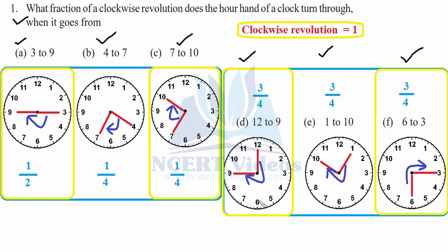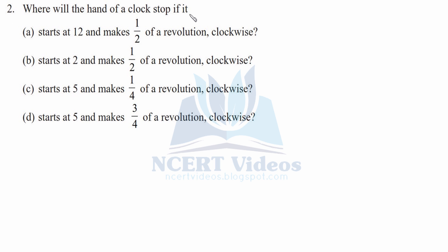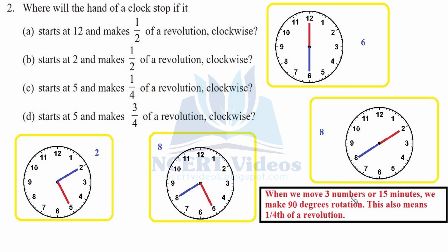Question 2: Where will the hand of a clock stop? The questions are: a) starts at 12 and makes half a revolution clockwise, b) starts at 2 and makes half a revolution clockwise, c) starts at 5 and makes one-fourth of a revolution clockwise, d) starts at 5 and makes three-fourths of a revolution clockwise. One thing to keep in mind: when we move three numbers — like 5, 10, 15 minutes — we take 90 degree rotation, which means one-fourth of a revolution.